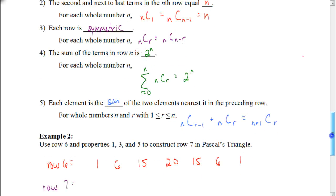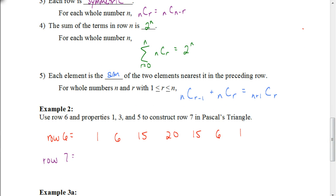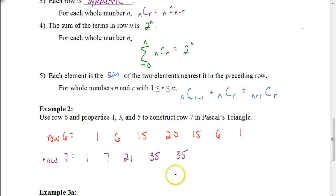Let's use row 6 and properties 1, 3, and 5 to construct row 7 of Pascal's Triangle. Property 1 tells us the first and last numbers are 1. Using property 5, we add: 1 plus 6 is 7, 6 plus 15 is 21, 15 plus 20 is 35, and 20 plus 15 is 35 again. Since I've hit 35 twice, I know the row is symmetric — so the remaining terms mirror back: 21, 7, and 1. That gives us row 7.